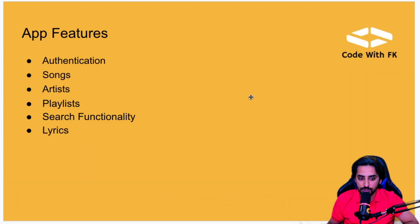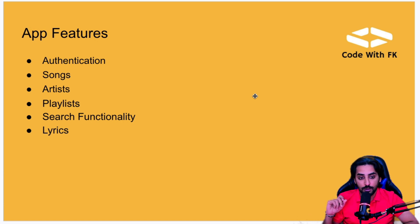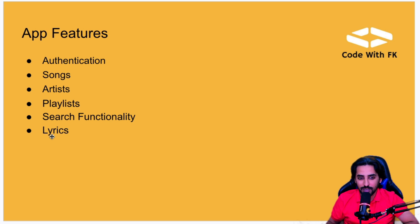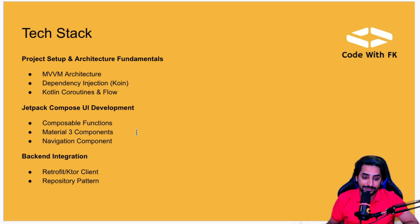The next thing is app features. The core features on top of my mind are: authentication — basic authentication, not Facebook or Google since we already did that in a previous food delivery app project. Then we'll implement songs listing, artist playlists, search functionality across songs, artists and playlists, and lyrics so users can see them on screen.